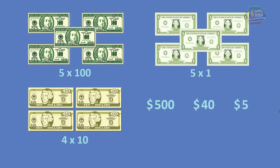To answer how much money she earned, we just need to add 500 plus 40 plus 5, which equals 545 dollars. This means that Shaira earned 545 dollars.